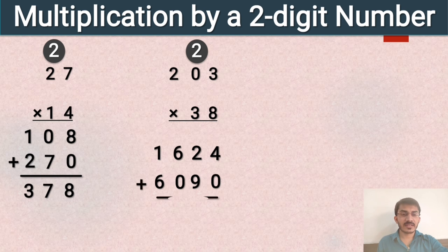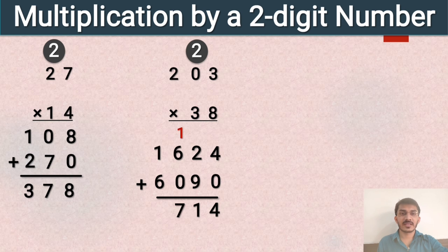4 plus 0 is 4. 2 plus 9 is 11, so we write 1 and carry 1 forward. 6 plus 1 is 7, and 1 plus 6 is 7. So 203 multiplied by 38 is equal to 7714.